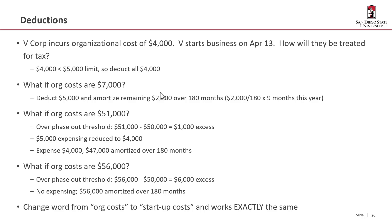What if org costs were instead $56,000? We're over the $50,000 phase-out threshold by $6,000. Since $6,000 would reduce $5,000 to a negative number, the immediate deduction is reduced to zero — no expensing at all. All $56,000 would need to be amortized over 180 months. And if you change the words 'org costs' to 'startup costs,' it works exactly the same way.